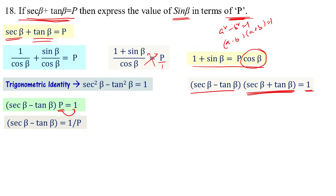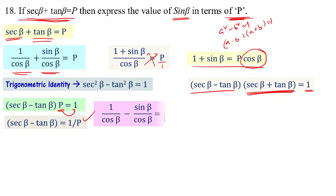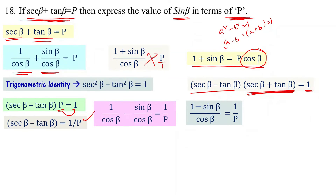Expanding: sec beta is 1 by cos beta, and tan beta is sin beta by cos beta. So the equation sec beta minus tan beta equal to 1 by p becomes: 1 by cos beta minus sin beta by cos beta equal to 1 by p, which rearranges to 1 minus sin beta divided by cos beta equal to 1 by p.